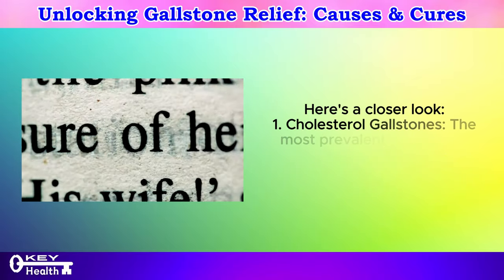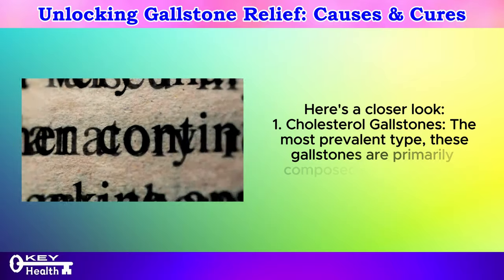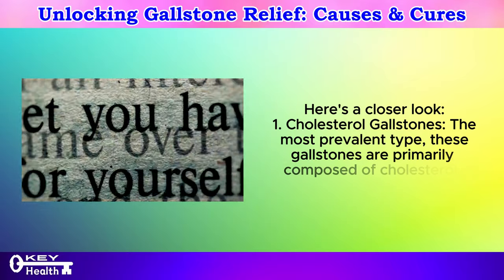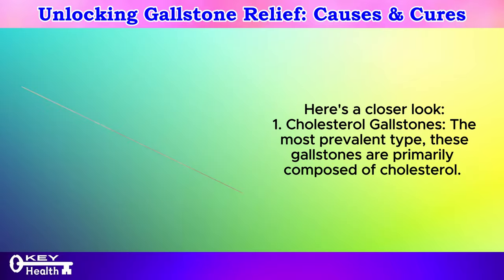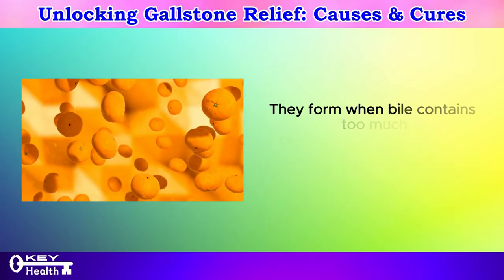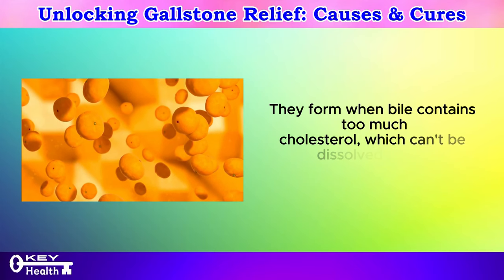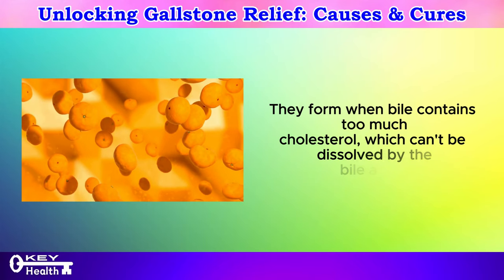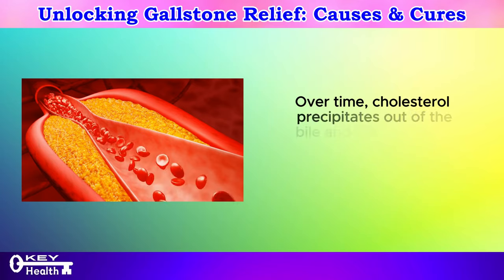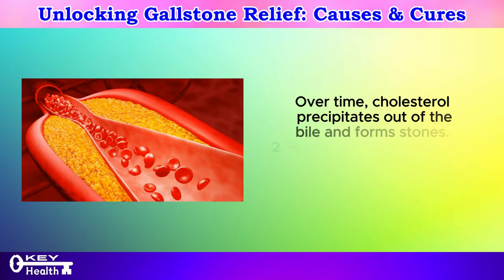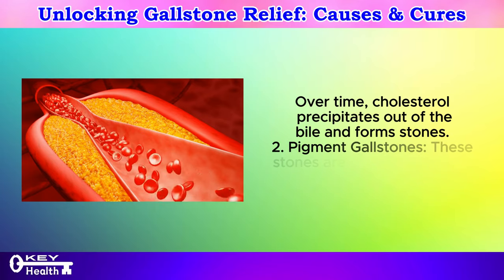Cholesterol gallstones: The most prevalent type, these gallstones are primarily composed of cholesterol. They form when bile contains too much cholesterol, which can't be dissolved by the bile acids. Over time, cholesterol precipitates out of the bile and forms stones.